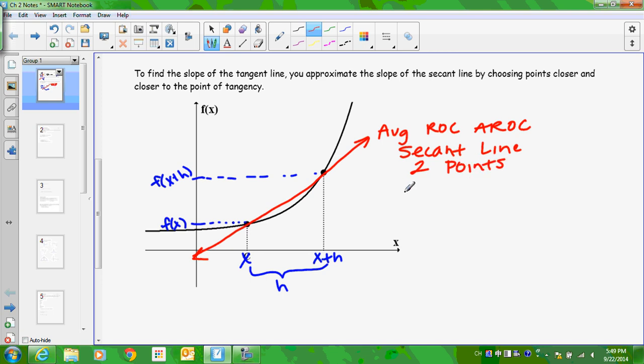And if I wanted to find the slope here, I would just do y2 minus y1, just using slope formula, over x2 minus x1. And so we'd have x plus h minus x. And then notice that the x's actually end up canceling. So we're left with just h in the denominator.